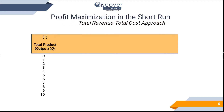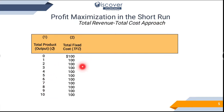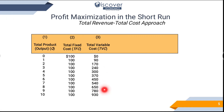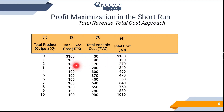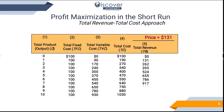Now let's do profit maximization in the short run. The formula of profit is total revenue minus total cost. Total fixed cost is pre-decided and stays the same in the short run. Variable cost increases with the production of every new item. Total cost is the sum of total fixed cost and variable cost: for example, 100 + 90 = 190, 100 + 170 = 270, 100 + 240 = 340, 100 + 370 = 470, and so on.